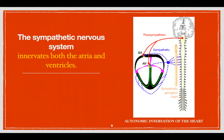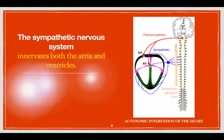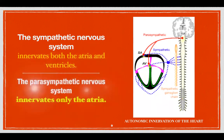The parasympathetic nervous system emerges from the dorsal motor nucleus of the vagus nerve in the medulla and it innervates the atria only. So the parasympathetic nervous system has little or no control on ventricular contractility.